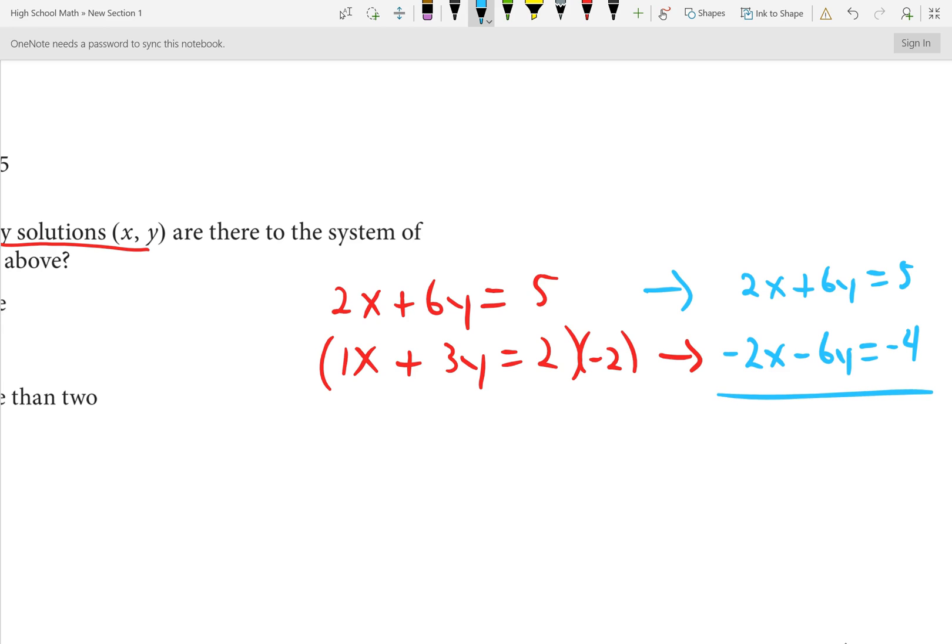Well, 2X minus 2X, that's 0. It eliminates. But so does 6Y plus negative 6Y. That's also 0. So the whole left expression is 0. 5 minus 4 is 1. If all of your variables fall out and you get this false statement, this tells you there are no solutions. These would be two parallel lines. Graphically, it would be two parallel lines.